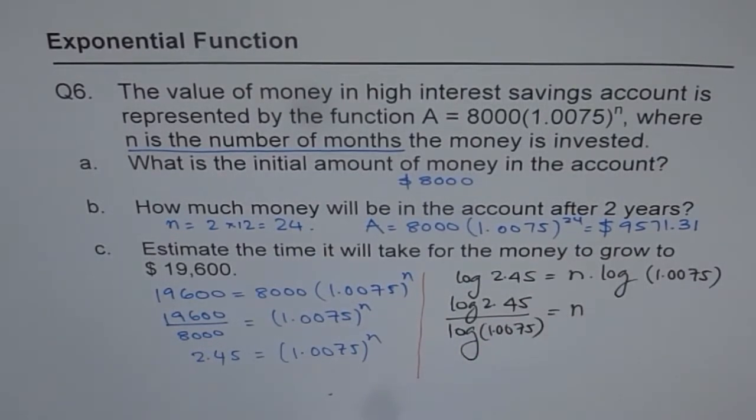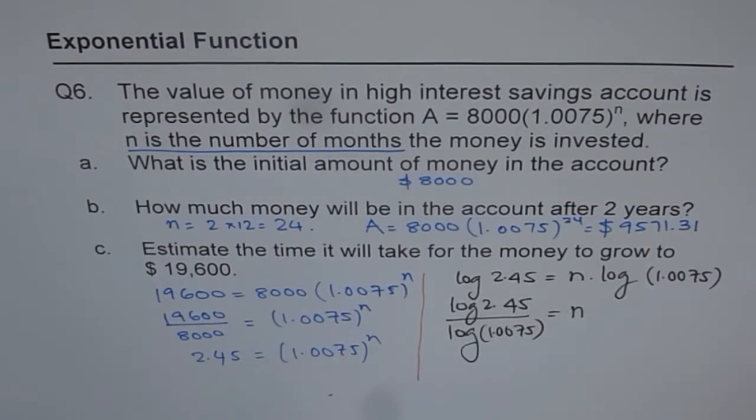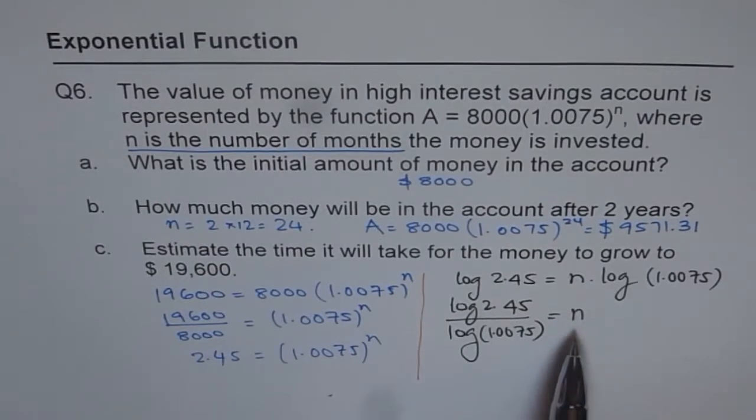And from here, we can find N equals log of 2.45 divided by log of 1.0075. Now, those of you who haven't done log yet because exponential function, logarithm is the next chapter, you can always use this formula. That means log of this number divided by log of that number gives you N. So, that is the best way to do it and there is no harm doing it now with this method.